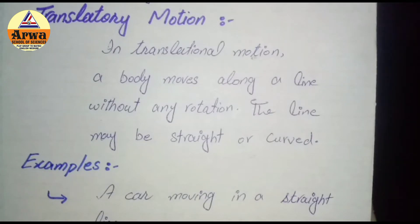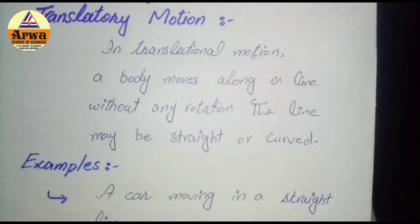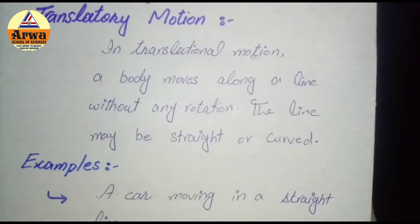In translational motion, a body moves along a line without any rotation. The line may be straight or curved. Agar koi body us line mein move kar rahi ho, to use hum kehte hain ki uska motion translational motion hai.